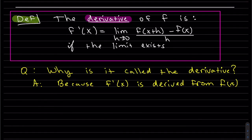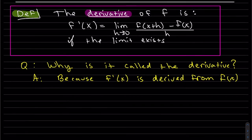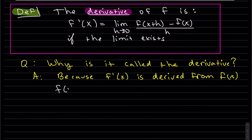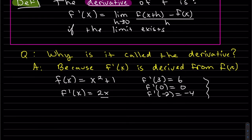Going back to the last example with better notation, instead of m_tan, we use f prime notation. Our function's derivative is 2x, found using the limit formula as h goes to zero. So f prime of 3 equals 6, f prime of 0 equals 0, and f prime of negative two equals negative four — all worked out in the same problem.